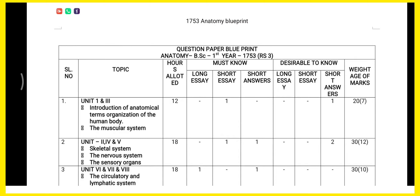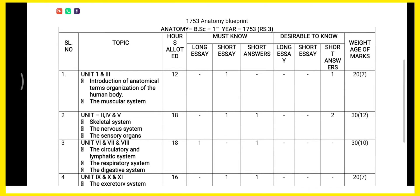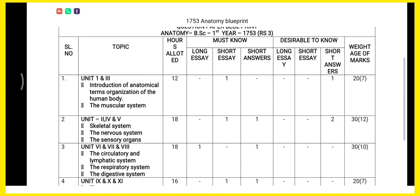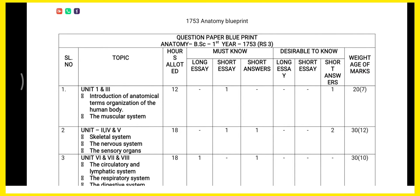You can see here unit 1 and 2 consist of a weightage of 7 marks. There are two columns: must know and desirable to know. Unit 1 and 3 cover introduction of anatomical terms, organization of the human body, and the muscular system. For 5 marks, one question will definitely come. For 2 marks, desirable to know means it may or may not come. The must know column has about a 90% chance of appearing in the exam.